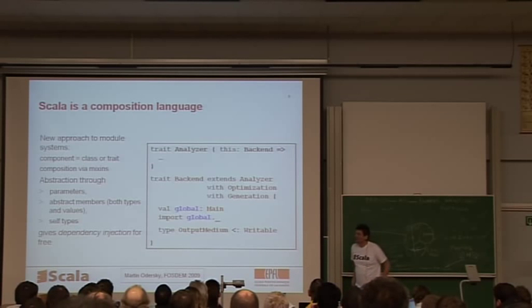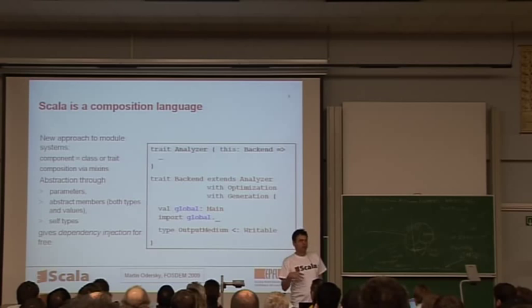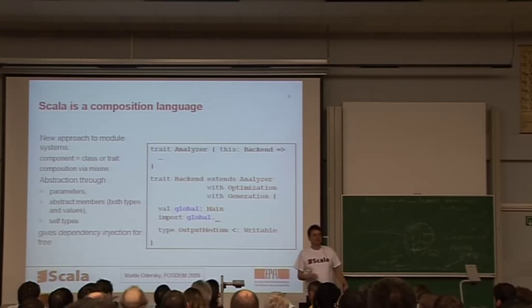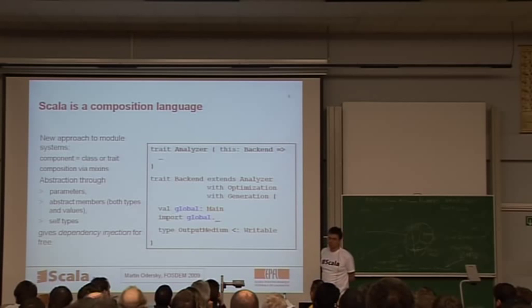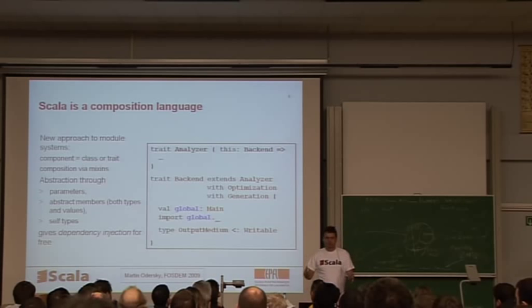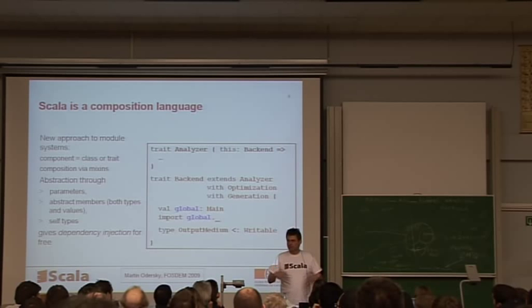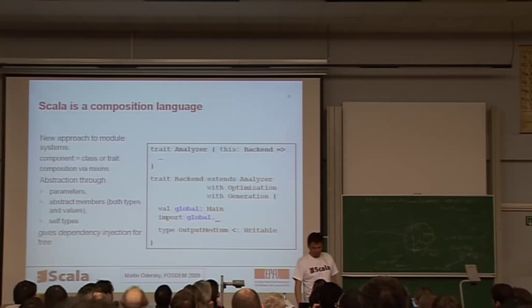Yet another way to look at it is to say Scala is a language for programming in the large, a software architecture language or composition language. In fact, it embodies a completely new approach to the modularity problem, to module systems. So in Scala, a component is a class or a trait. A trait is something in between a class and an interface. You can mix several traits together. And the composition is done with this mixin composition. And you have very powerful ways to abstract, to hide details through parameters, through abstract members, and through self-types. And all this gives you something for which nowadays you need tools, dependency injection tools like Spring. You could say that's already embodied in the language.